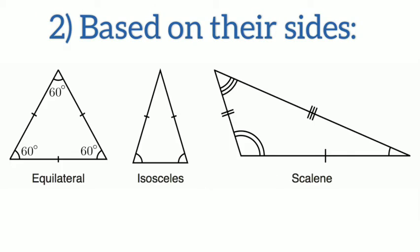Now, the next classification is based on their sides. We have three types which are equilateral, isosceles and scalene triangle. Now, in an equilateral triangle, all the three sides will be equal, okay?